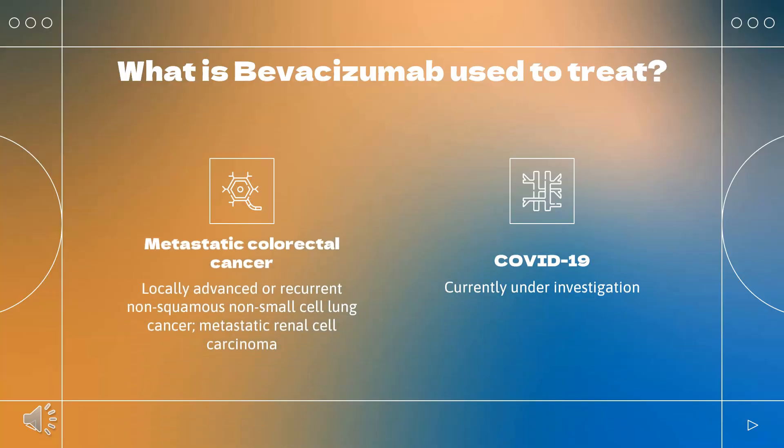As a vascular endothelial growth factor (VEGF) inhibitor, Bevacizumab is used in several chemotherapy regimens to treat metastatic colorectal cancer; metastatic, unresectable, locally advanced, or recurrent non-squamous non-small cell lung cancer; metastatic renal cell carcinoma; metastatic, persistent, or recurrent cervical cancer; primary peritoneal cancer; epithelial ovarian cancer; fallopian tube cancer; breast cancer; and recurrent glioblastoma. Interestingly, Bevacizumab is currently under investigation for the treatment of COVID-19 complications including acute respiratory distress syndrome (ARDS) and acute lung injury (ALI).